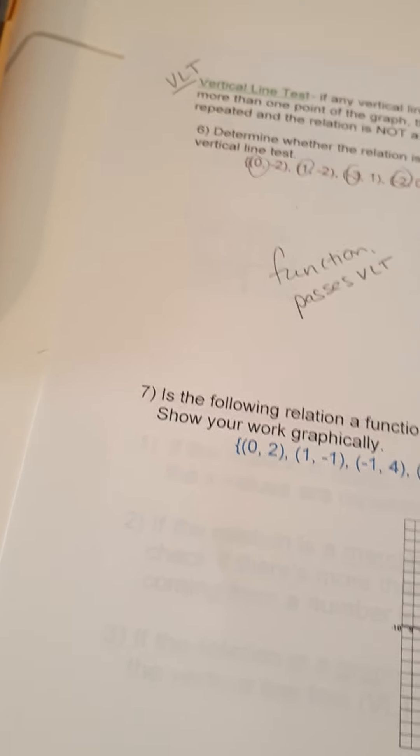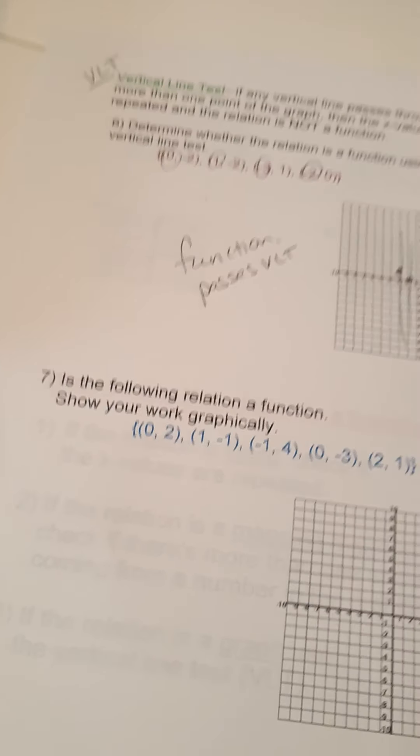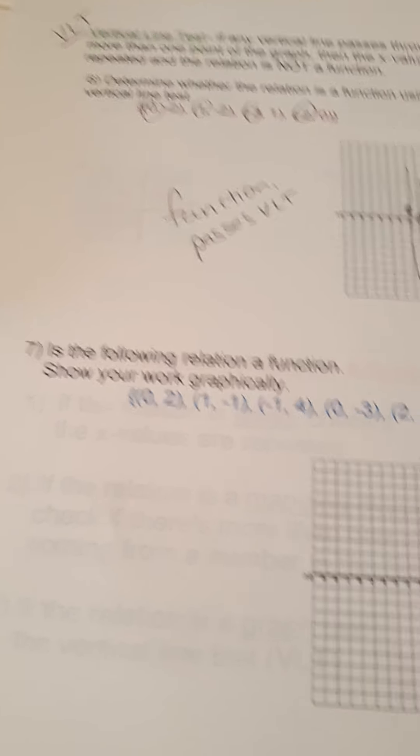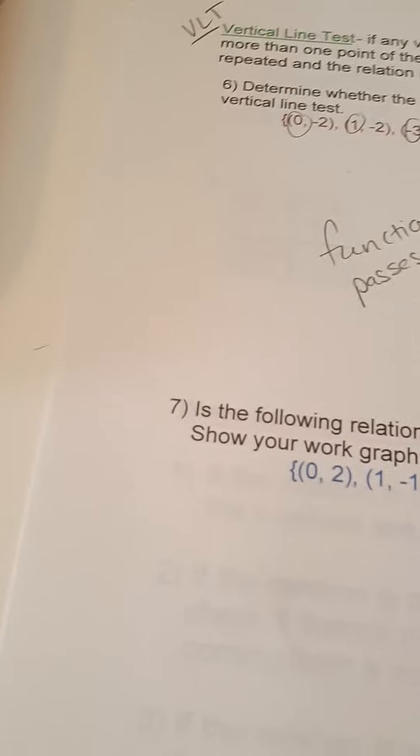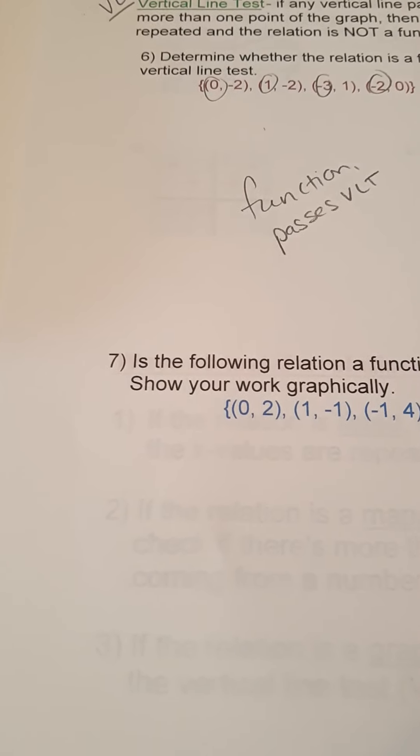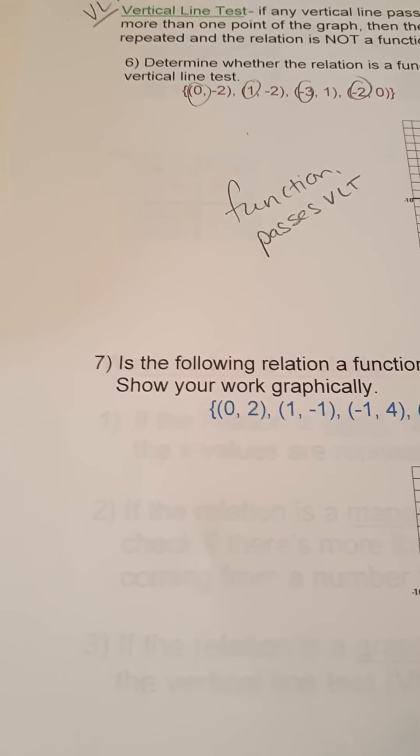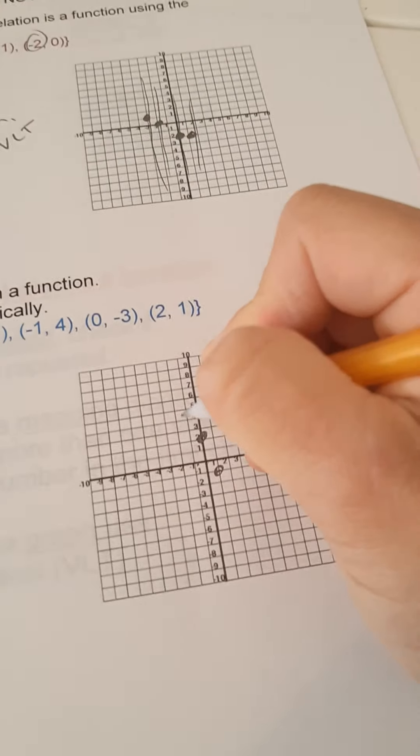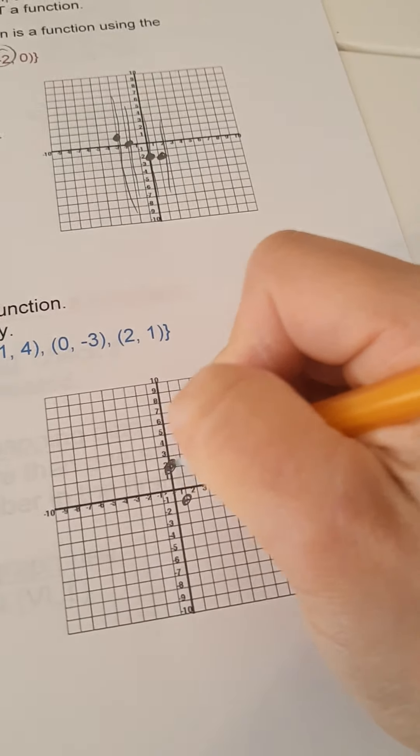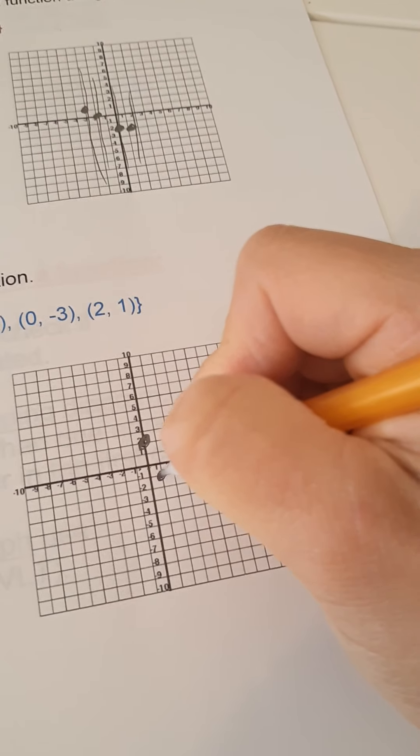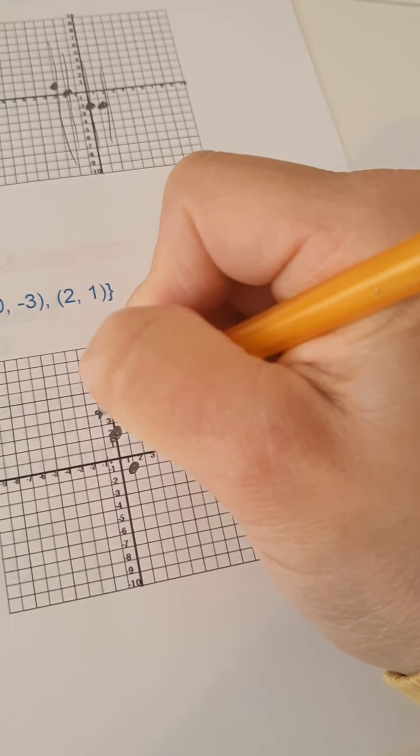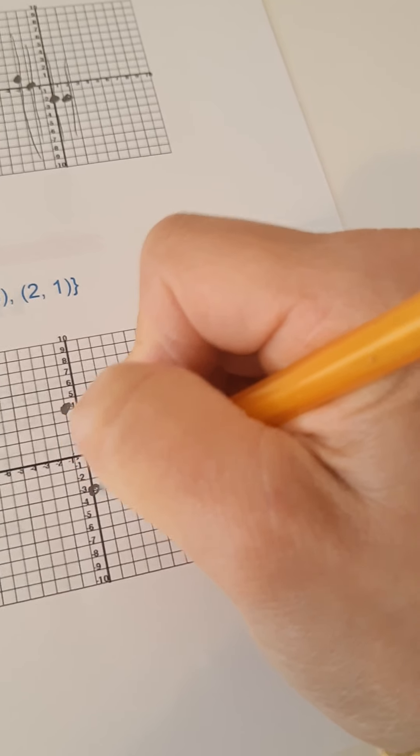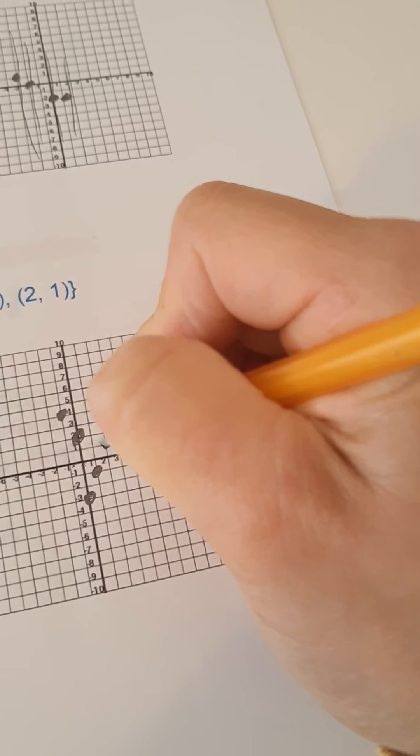All right. If you need more clarification, here's another one. Is the following relation a function? So, I'm plotting the points. 0, 2, 1, negative 1, negative 1, 4. Hello, it would be helpful if you could see my graphing, huh? 0, 2, 1, negative 1, negative 1, 4, 0, negative 3, and 2, 1.